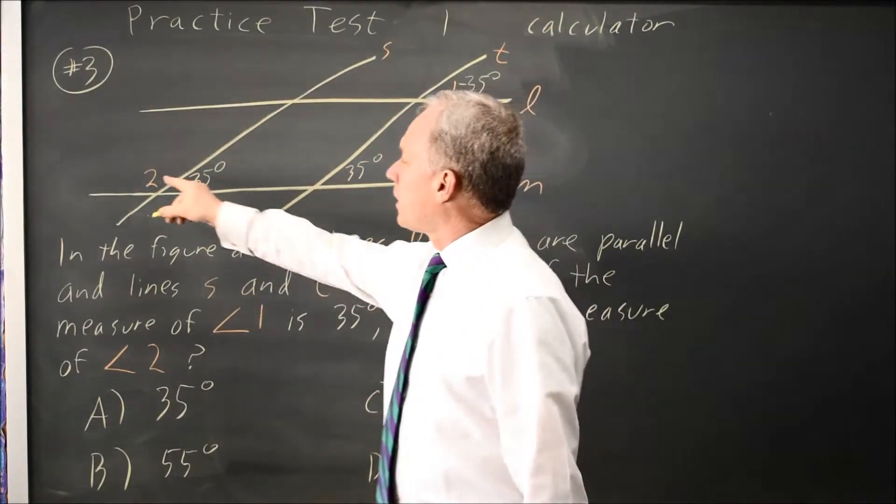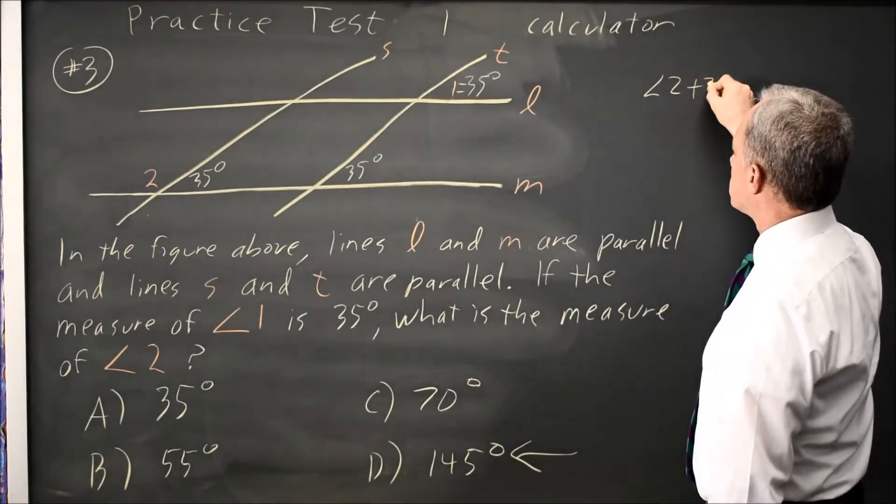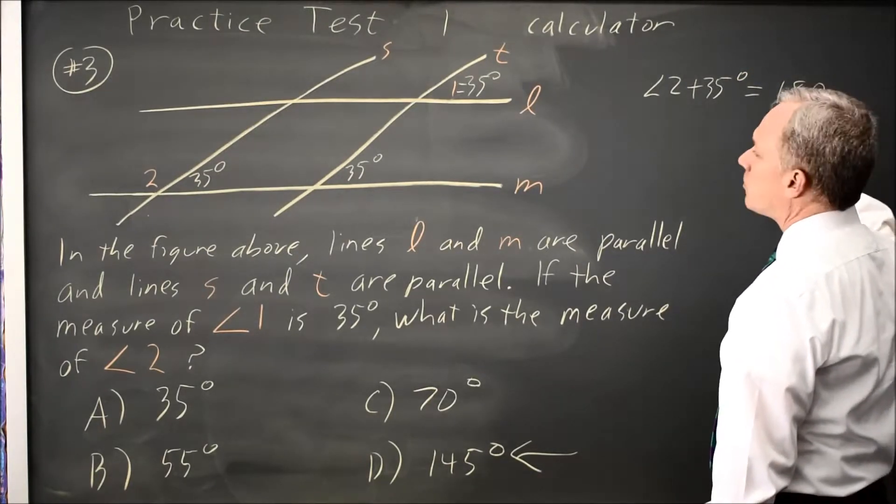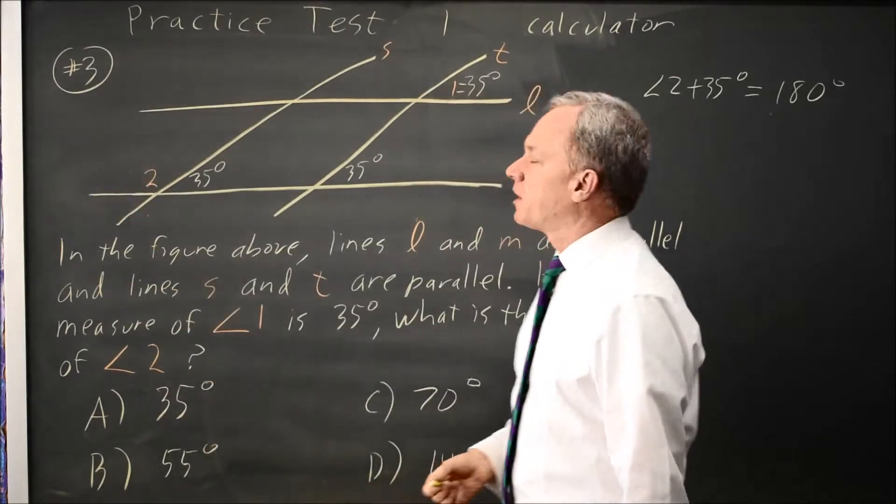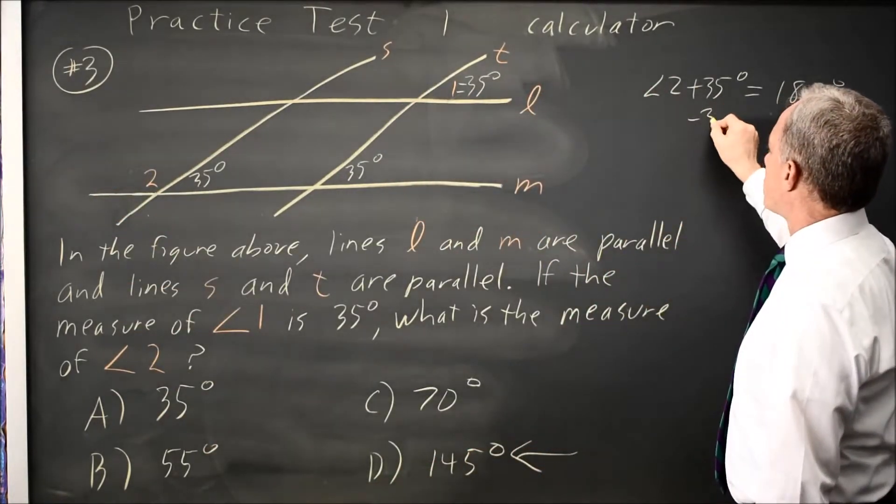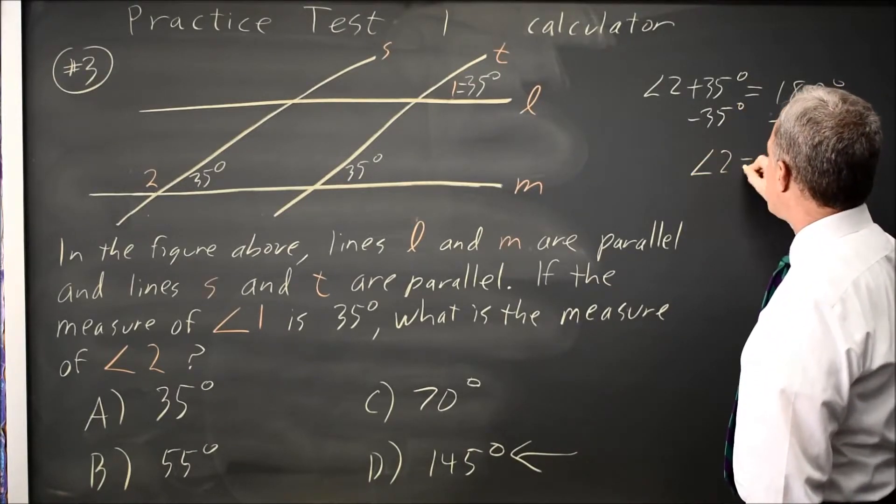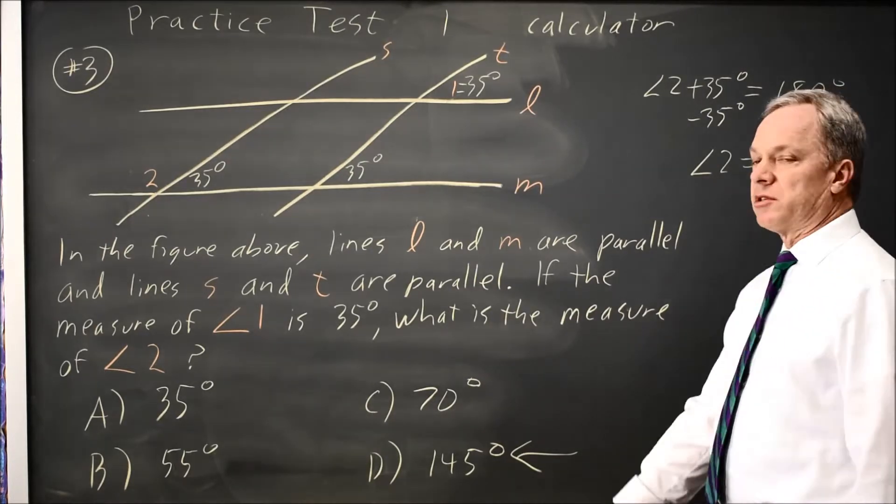And angle 2 plus 35 degrees equals 180 degrees because these two angles combined make up a straight angle. If they're supplementary, they add up to 180. Subtract 35 from both sides, and you get angle 2. The one they're asking about is 145 degrees, which is choice D.